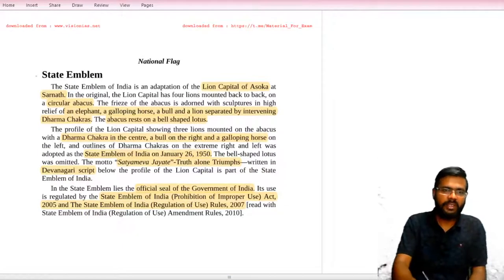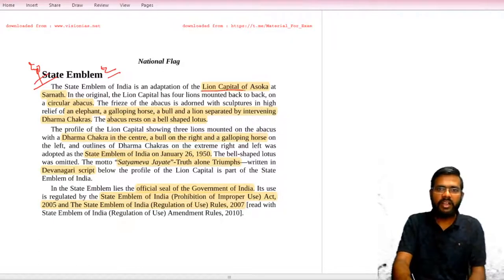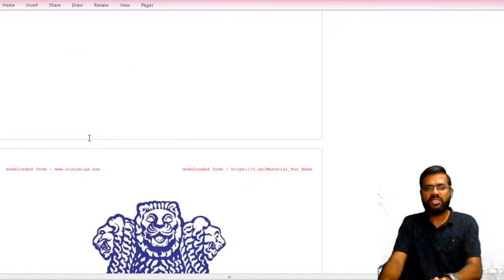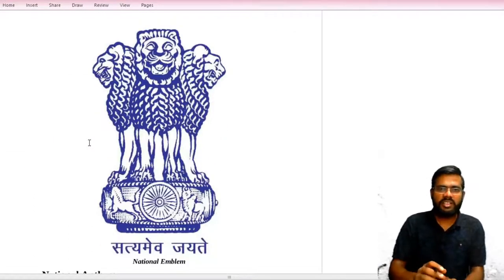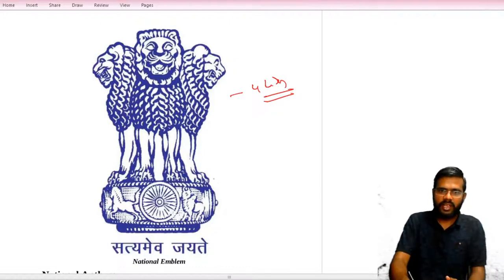Then coming to the state emblem. This is the Lion Capital of Ashoka. The national emblem is the Lion Capital. Three lions are visible, and the fourth lion is hidden behind. They stand back to back, mounted on a circular abacus.